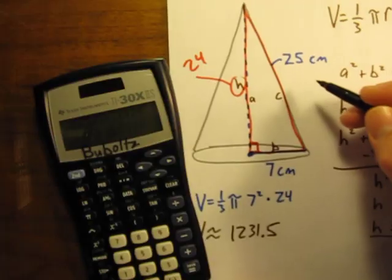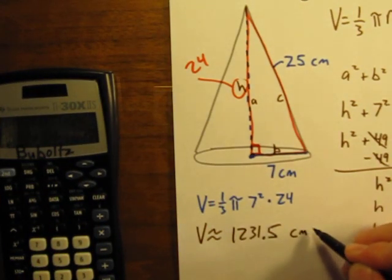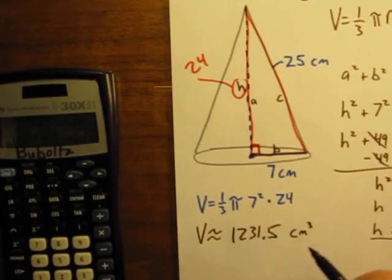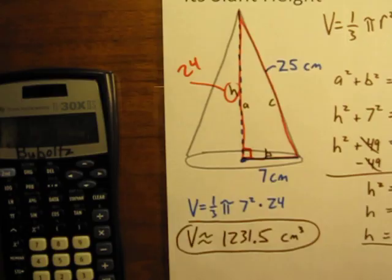is going to be approximately equal to 1,231.5, and all of these lengths were measured in centimeters, so volume is going to be in centimeters cubed, cubic centimeters. So there's our final answer.